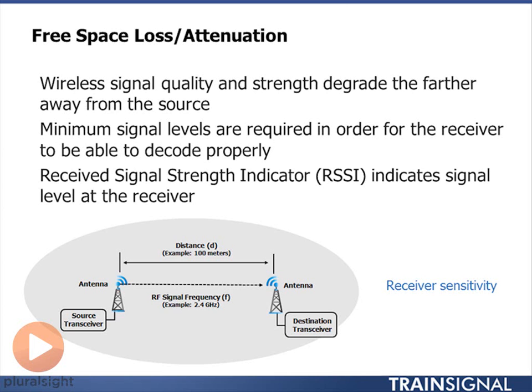As I move away I have to reduce my modulation encoding because I'm dealing in a more difficult environment. My received signal is weaker, so I have to drop my modulation encoding and therefore my data rate will drop. I need to make sure that I receive enough signal strength to recover the signal.